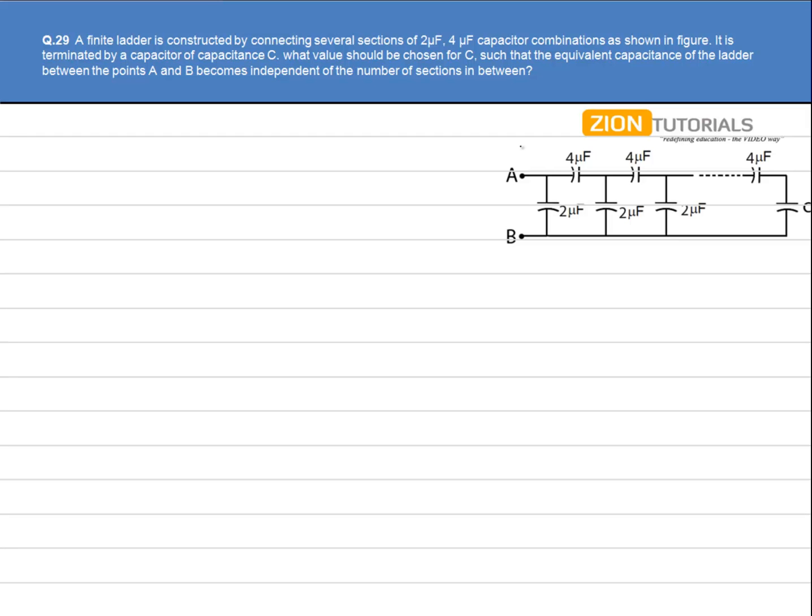So what is happening is we have a number of sets of 2uF and 4uF capacitors in this circuit. Now let's say there is a 2uF capacitor in the end.